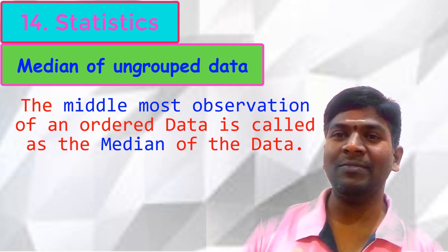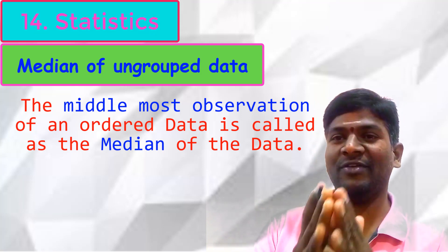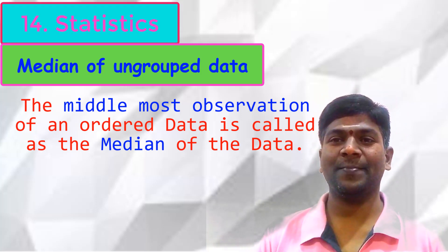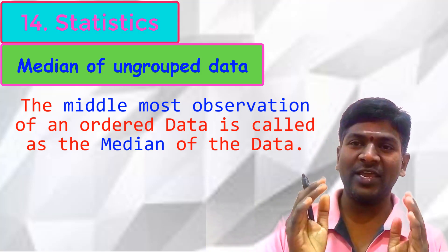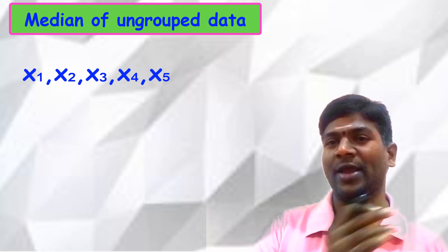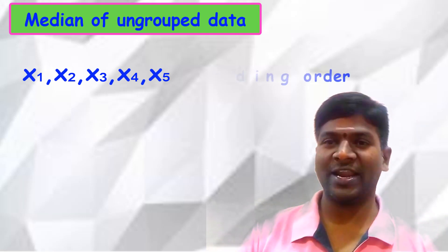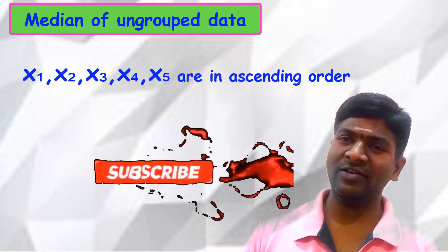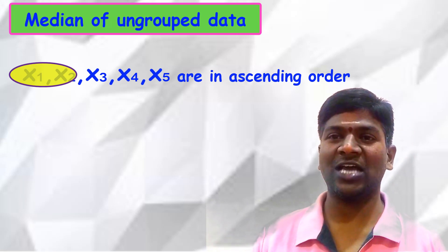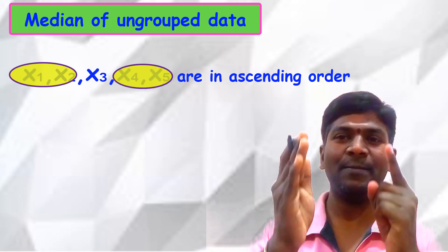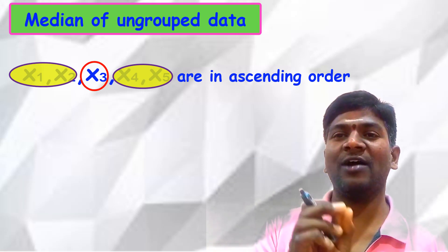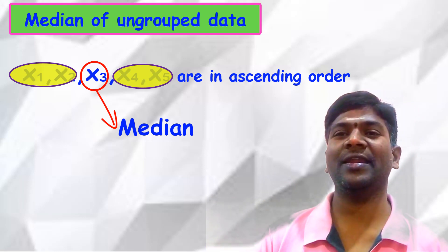One question arises: sometimes one observation will be the mid-value, and sometimes two observations will be the mid-values of the data. If there are five observations, after arranging in ascending or descending order, if we leave the first two and last two observations, there will be one observation in the middle — that is the median of the data.